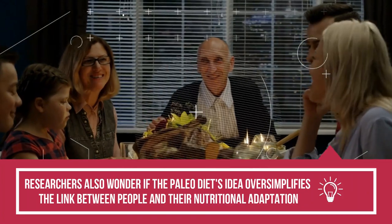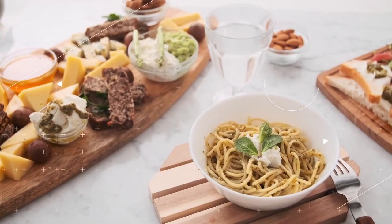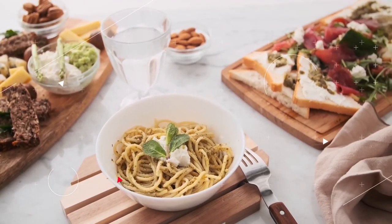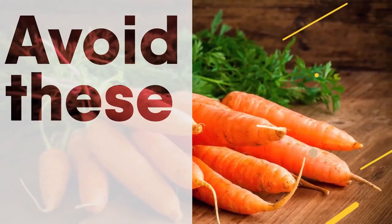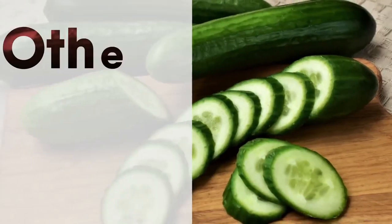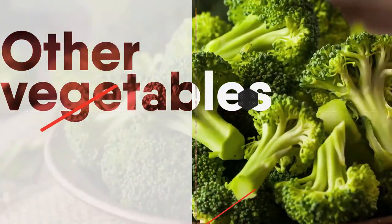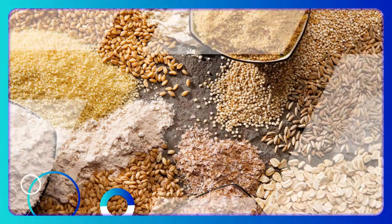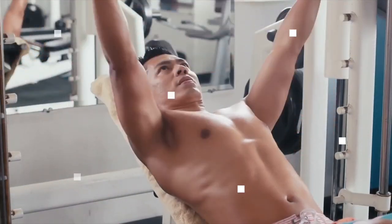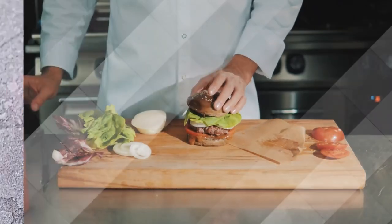Researchers also wonder if the paleo diet's idea oversimplifies the link between people and their nutritional adaptation. Other factors to consider are variables such as location, temperature, and food supply which have affected changes in human diets in addition to farming. A recent anthropological study has revealed that our forefathers ate a predominantly plant-based rather than meat-based diet, contrary to conventional perception. Up to 30,000 years ago, long before cultivation, early human diets may have included wild grains. Beyond the paleolithic era, humans have undergone evolutionary genetic changes, some of which appear to be tied to nutrition, such as a rise in the number of genes involved in the breakdown of dietary carbohydrates.